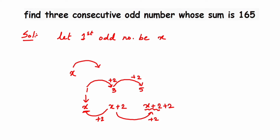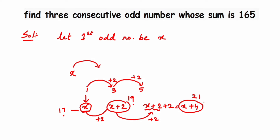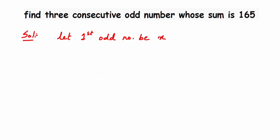The first odd number is x, the second is x plus 2, and the third is x plus 4. For example, if x is 17, then 17, 19, and 21 are consecutive odd numbers. So we assume the three consecutive odd numbers are x, x plus 2, and x plus 4.